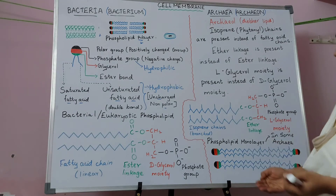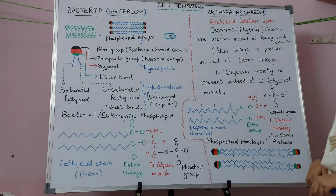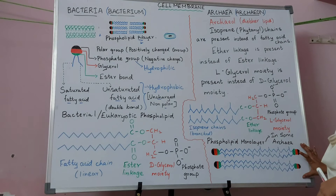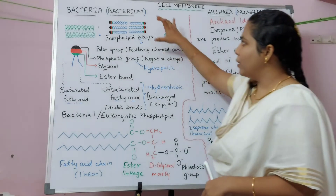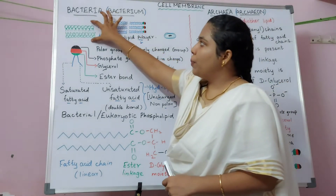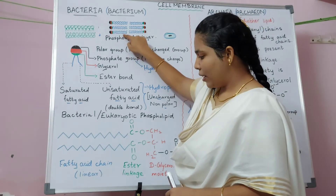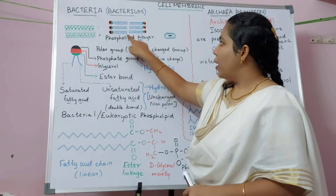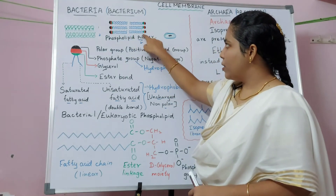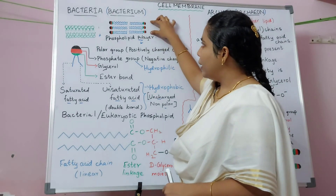Some archaea have a phospholipid monolayer instead of a bilayer. To understand this, consider the phospholipid bilayer drawn as: fatty acid side chain — ester linkage — glycerol — phosphate, mirrored on both sides. In a monolayer, it is just a single layer instead of two.